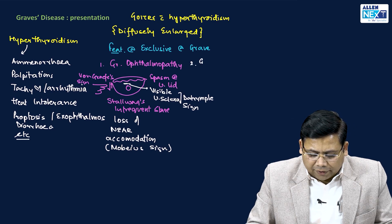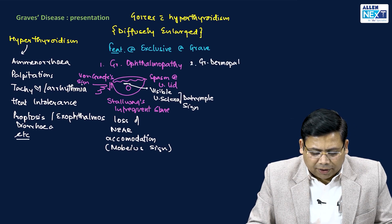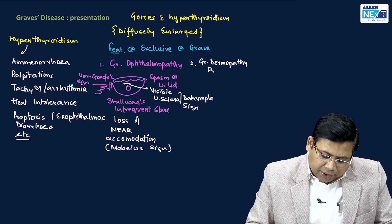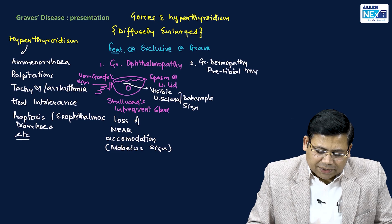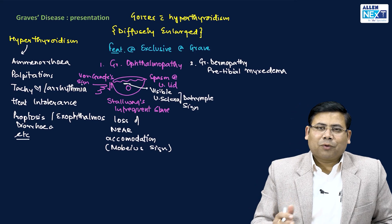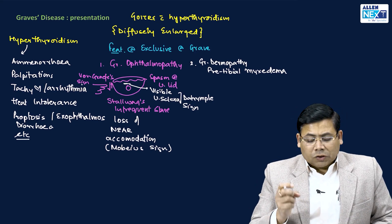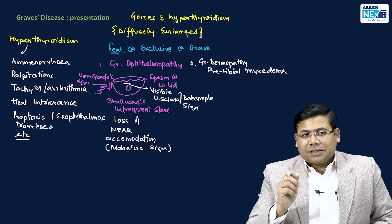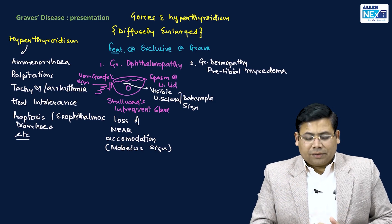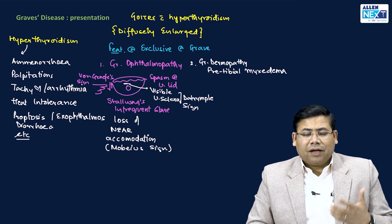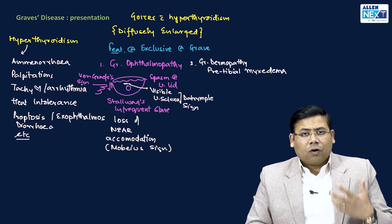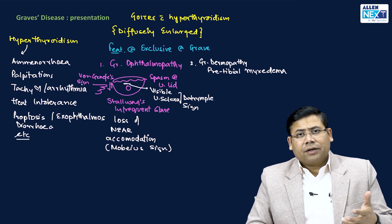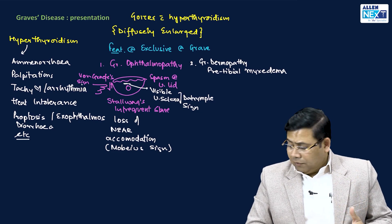You also get to see Graves dermopathy, which presents as pre-tibial myxedema. The word myxedema here is a misnomer, because myxedema typically refers to hypothyroidism with swelling; here a similar swelling is seen in the tibial region. Additionally, there is a palpable thrill due to increased vascularity of the gland.